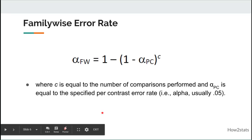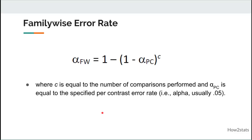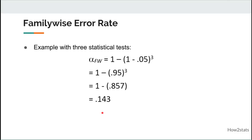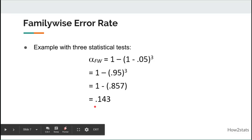Nobody in practice really calculates the family-wise error rate for any particular study, but here's an example of what that looks like. With 3 statistical analyses conducted on the same sample of data, you have a family-wise error rate equal to 0.143.